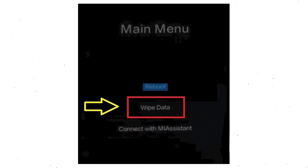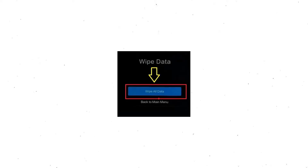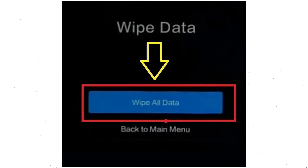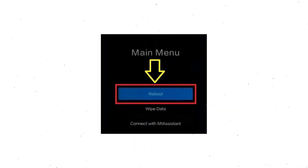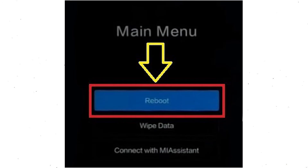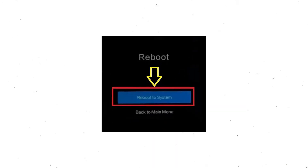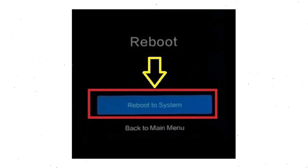Then you will see the recovery menu. Next, select the wipe data option. Now choose the wipe all data option using the volume buttons and confirm with the power button. After that, choose the confirm option. Select back to the menu and choose reboot. Once that is done, select the option to reboot to system.